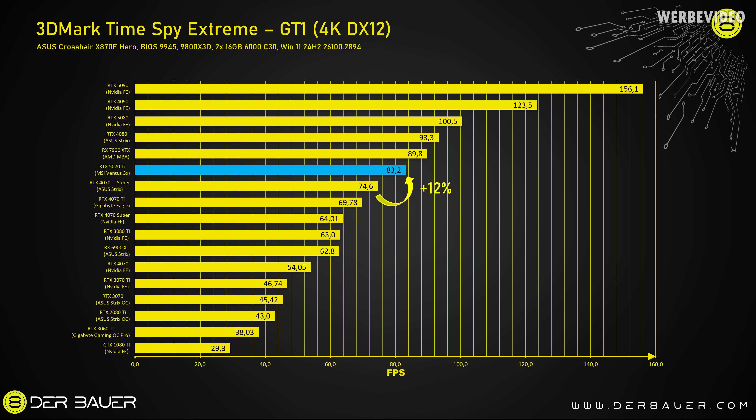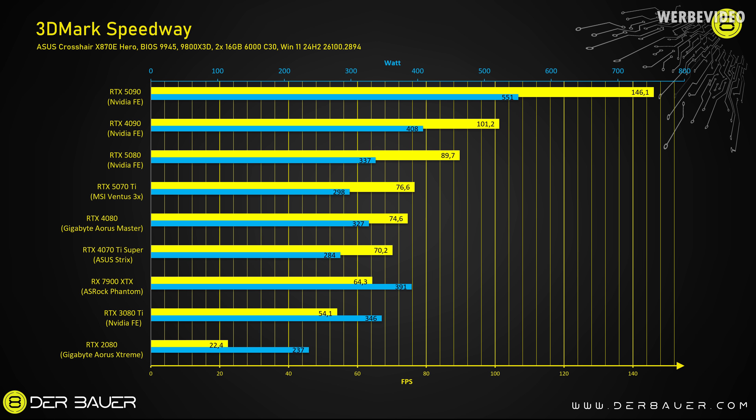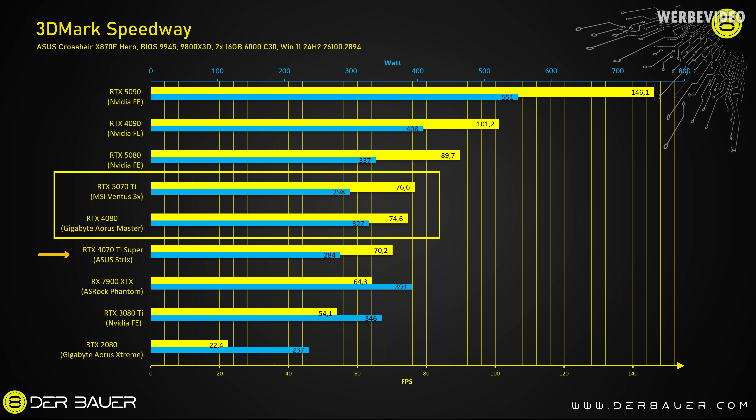In this situation, the 5070 Ti is about twice as fast as an RTX 2080 Ti. And now for newer games, 3DMark Speedway, especially if they use ray tracing. Interestingly, in this scenario, the 5070 Ti beats the RTX 4080 while consuming about 10% less power. It also clearly beats the 7900 XTX, and is about 9% faster than the 4070 Ti Super.